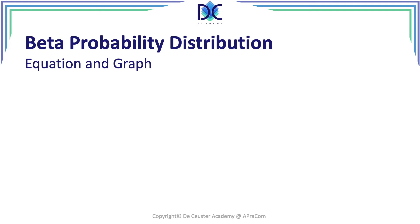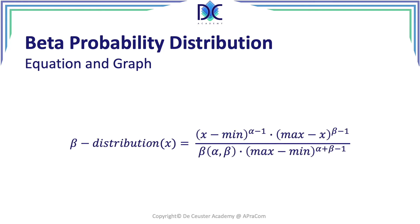There is also an equation and a graph for the beta distribution. You don't have to know this equation by heart. The beta probability distribution is available in Excel and is quite easy to use — you enter the minimum, the maximum, the x value, and the form factors alpha and beta.